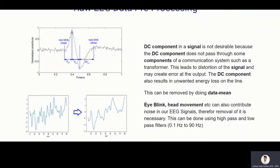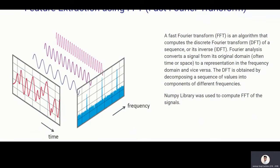Now, what is the data pre-processing method? The DC component in a signal is not desirable so I have removed the mean from it. Then there can be many noises like eye blinks, head movements and this can contribute a lot of noise in our EEG signals. So in order to remove it, I have bypassed it from high pass and low pass filter of 0.1 hertz to 90 hertz. I have also applied a moving average of 10.